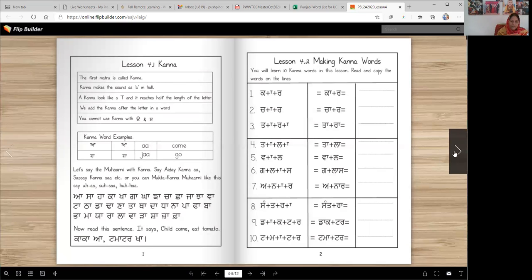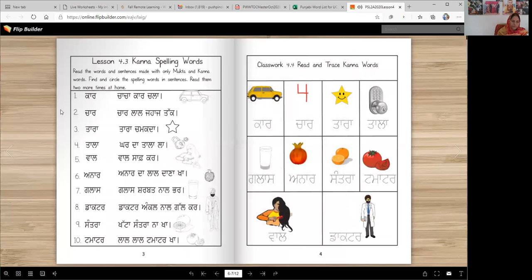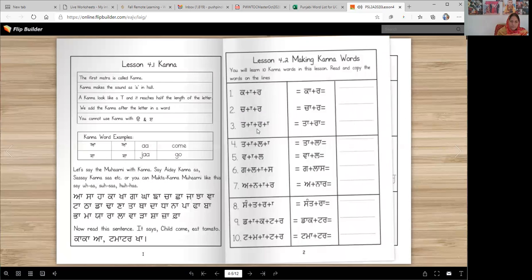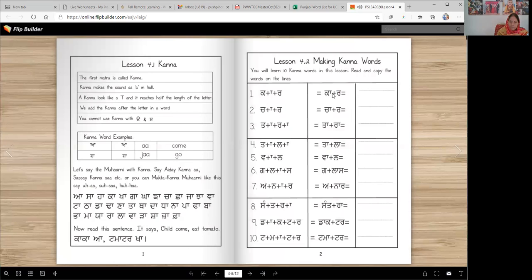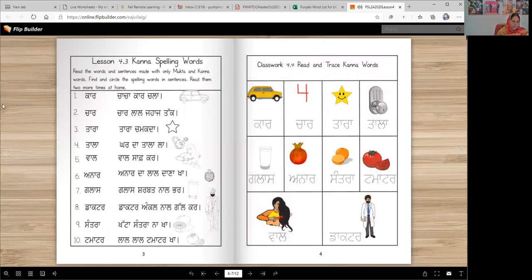Okay, so that's how you're going to write them over here. Now when you write, you're going to write the whole word, not with the plus signs. You just write kar, kakke-kanna-rara-kar. Okay, that's how you're going to write them.